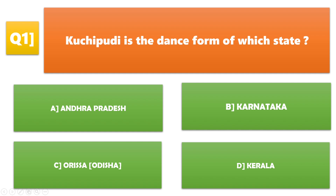Kuchipudi is the dance form of which state? A. Andhra Pradesh, B. Karnataka, C. Odisha, D. Kerala. A. Andhra Pradesh is the correct answer.